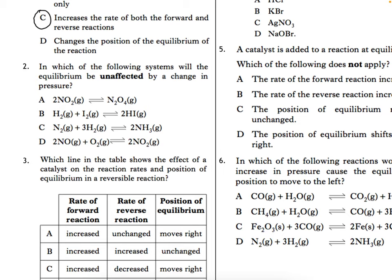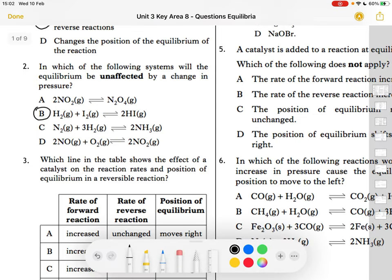So it can't be A because it's got two moles of gas on one side and one mole on the other. So obviously if you increase the pressure then it's going to go to the side with the least moles of gas. If you go for C then you've got four and two so that's not going to work. D you've got three and two. So it has to be B where you've got two moles of gas on each side.